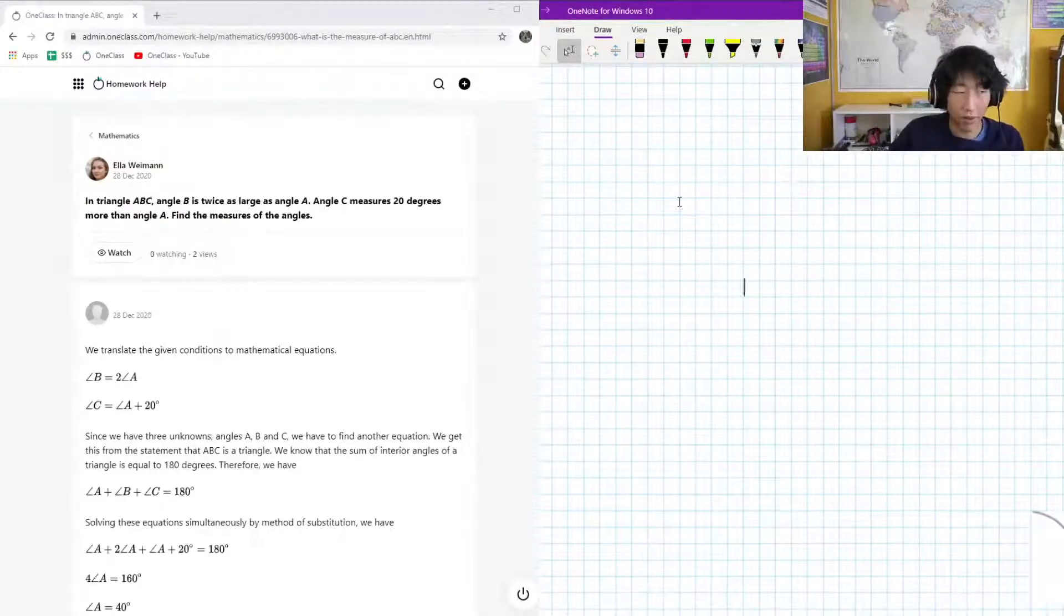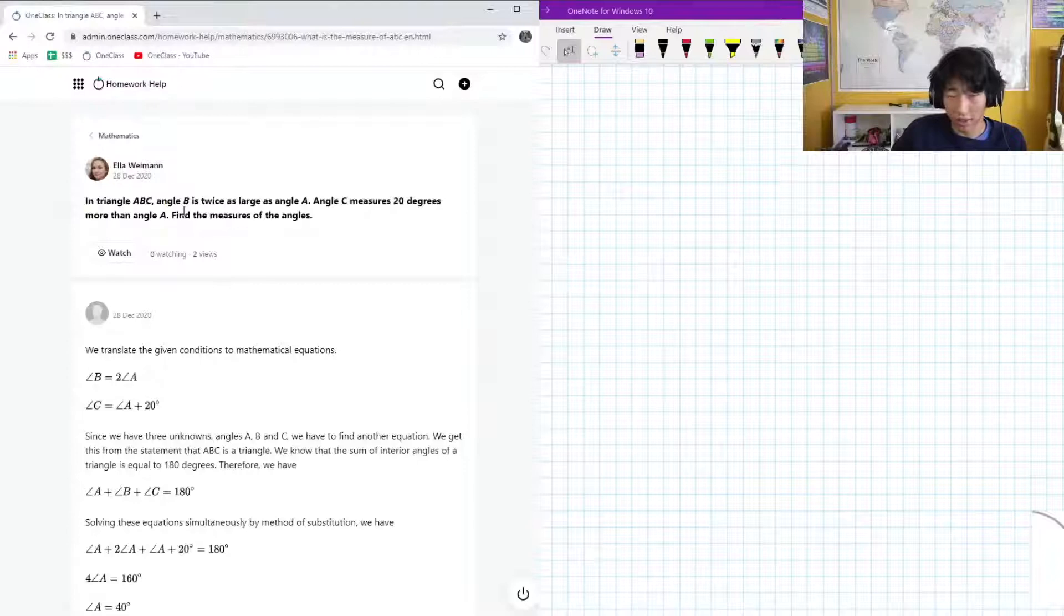Okay, so here we have the next question on the menu, and it is asking us: in triangle ABC, angle B is twice as large as angle A, angle C is 20 degrees more than angle A, and we need to find the measures of this angle. Now we don't have a diagram with this, but I don't think we really need a diagram for this.